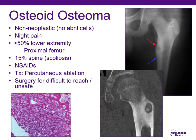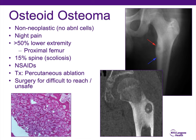Osteoid osteoma is another common lesion. Essentially there are no abnormal cells, but it is a neoplasm. It develops night pain that particularly resolves with NSAIDs. Fifteen percent of these lesions may develop in the spine, and they develop an atypical scoliosis with lesions on the concave side of the curve. It's very common in the lower extremity, particularly the proximal femur. Treatment is generally percutaneous radiofrequency ablation. Surgery can be performed for areas difficult to reach with a probe or unsafe for heating. The hallmark of these lesions is the nidus seen on CT scan.